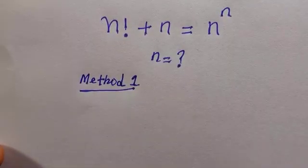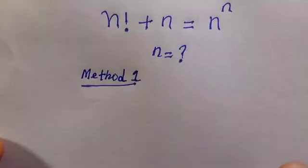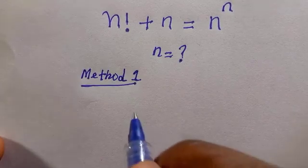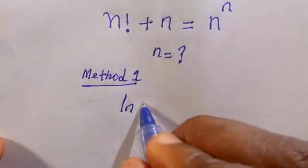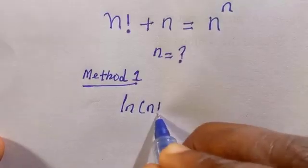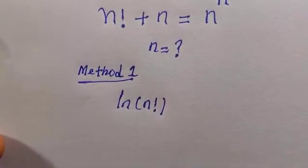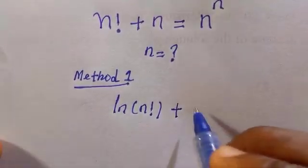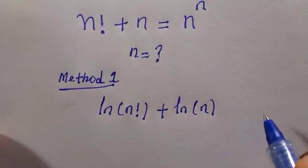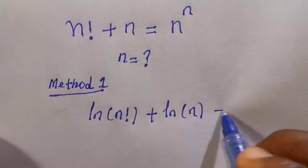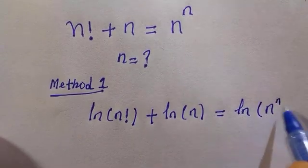For method one, I introduce the natural logarithm. So we write: ln of n factorial plus ln of n equals ln of n to the power n.